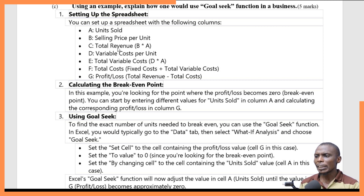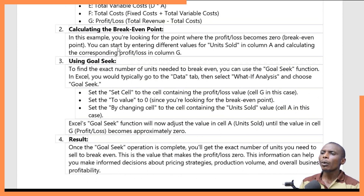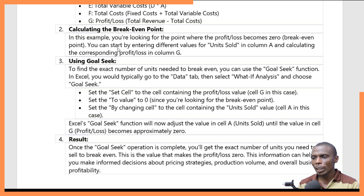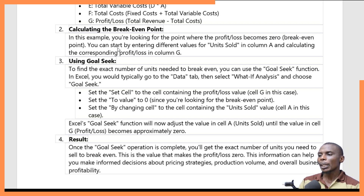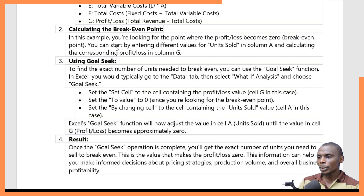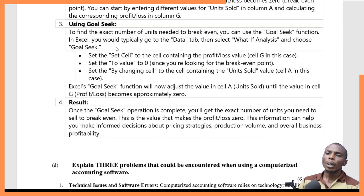Then set the changing cell — that is the cell containing the units sold value, which in our case is cell A. The goal seek function will adjust the value in cell A until the value in cell G (profit and loss) becomes approximately zero. This gives you the exact number of units you need to sell to break even, which you can use to make informed pricing or sales volume decisions.